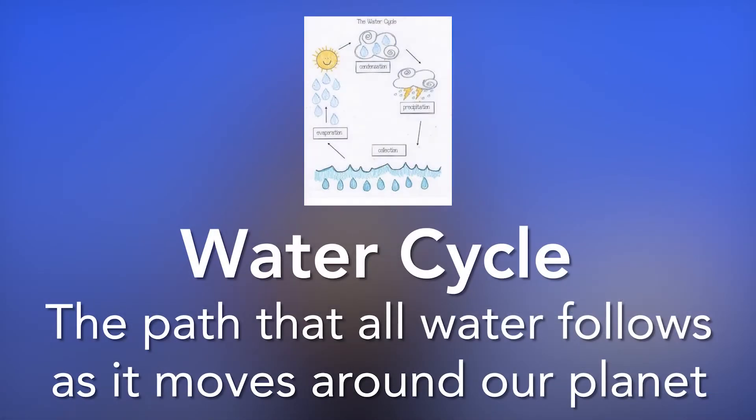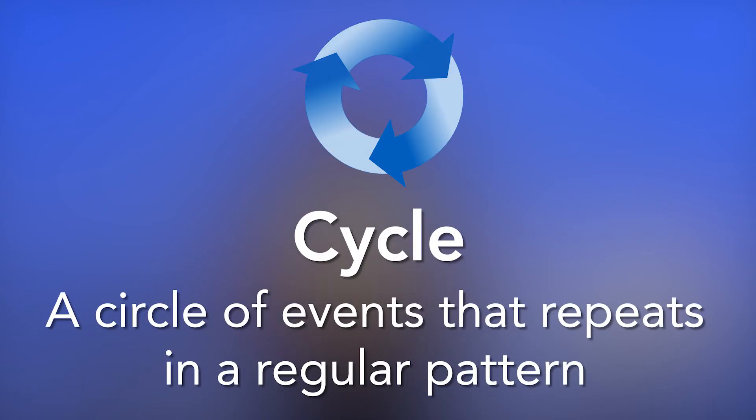Today we are going to learn about the water cycle. That's how my friends Blazer Fresh from GoNoodle sing their water cycle song. If you haven't heard it, you should check them out after this video. The water cycle is the path that all water follows as it moves around our planet. A cycle is a circle of events that repeats in a regular pattern.